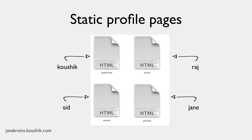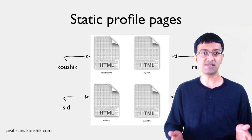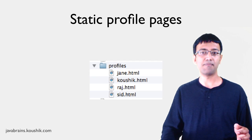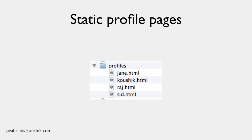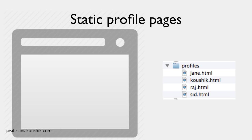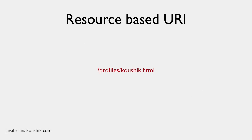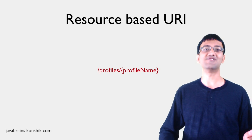Now let's say there are four users for our static web page: Kaushik, Raj, Sid, and Jane. I have four static HTML pages and the name of each file is the same as the name of the profile. I wouldn't want to put all of them in the root directory. Since these are profile pages, I'd probably create a profiles directory and put them all there. So I would create a directory called profiles and all these profile pages go into it. If I had to access Kaushik.html, my URI would be slash profiles slash Kaushik.html. Now if you drop the .html extension, you have your RESTful URI: slash profiles slash Kaushik. The URI for any profile page is slash profiles slash the profile name. And there you have it — that's your first RESTful resource-based URI.